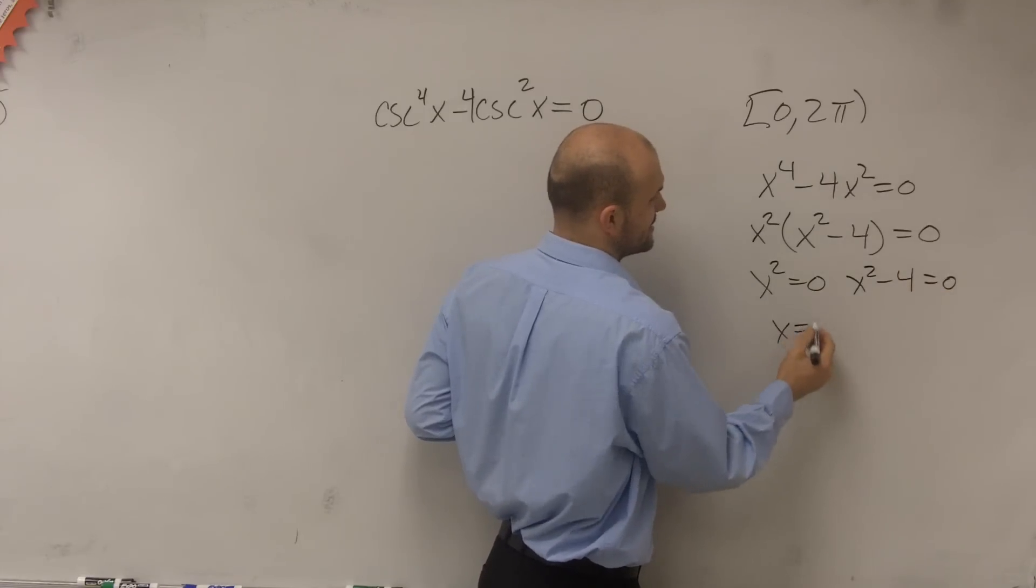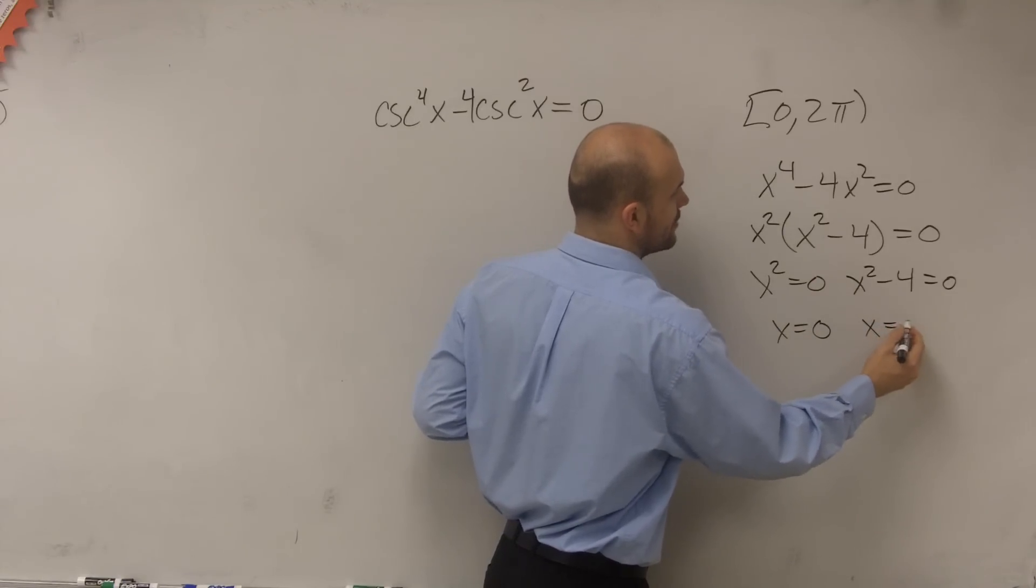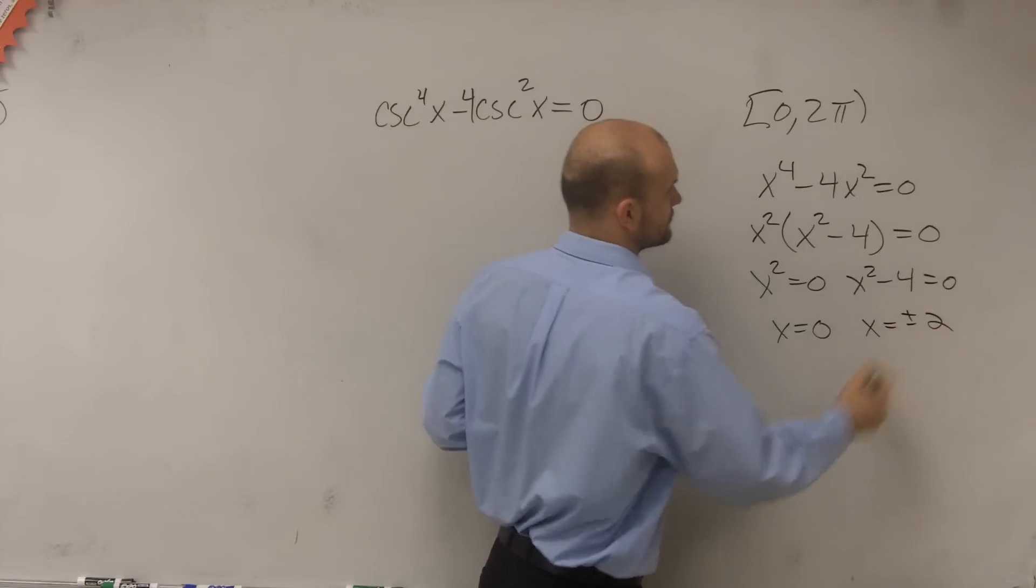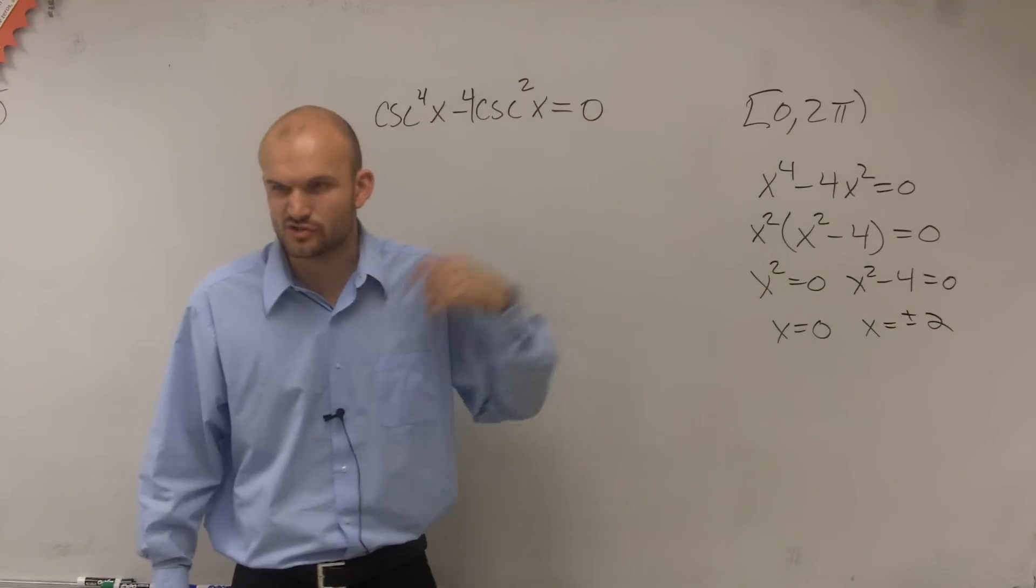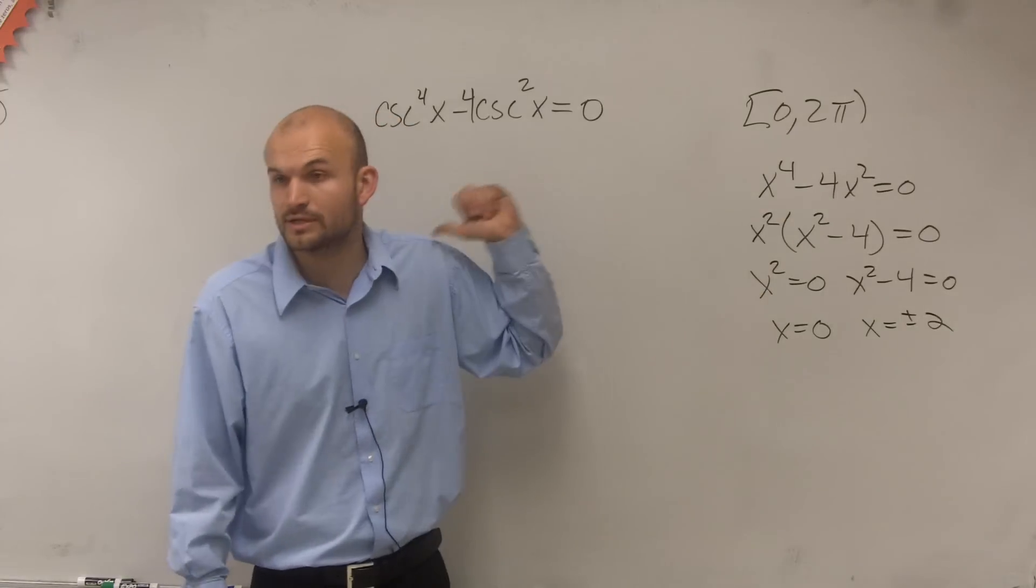Which states x squared equals 0 and x squared minus 4 equals 0. Therefore, you could say x equals 0. And then here, x equals plus or minus 2, right? As you solve for each one. So that's how we do it with algebra. Now we're just throwing in a little trig.